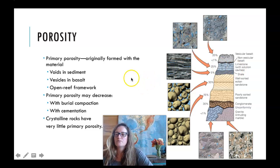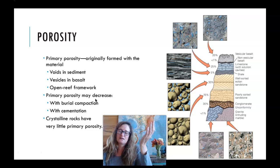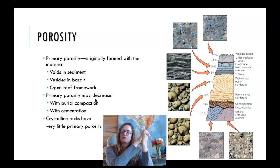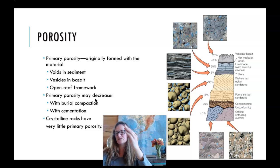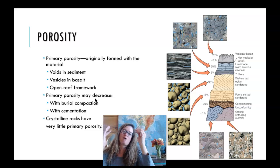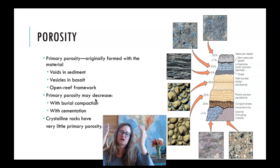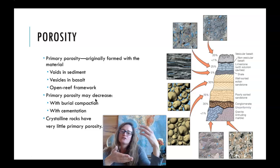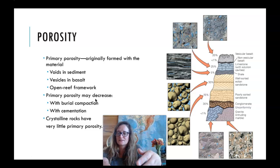Porosity may decrease with burial compaction — as that unit gets squeezed by overlying units, the porosity can decrease. With cementation, if there are percolating fluids precipitating minerals between the grains, that porosity can really drop, especially for something like a well-sorted aeolian sand, which could see a significant decrease in porosity if minerals are deposited between those clasts.